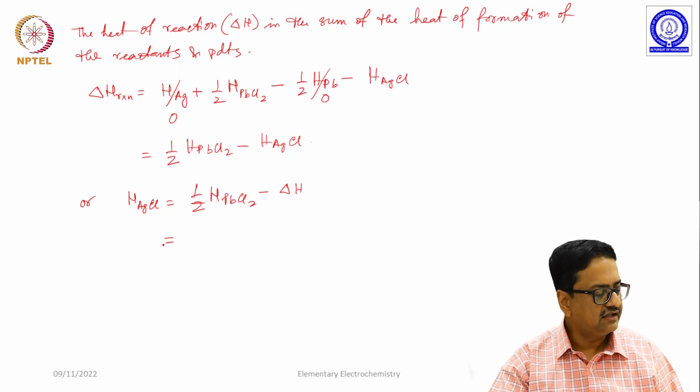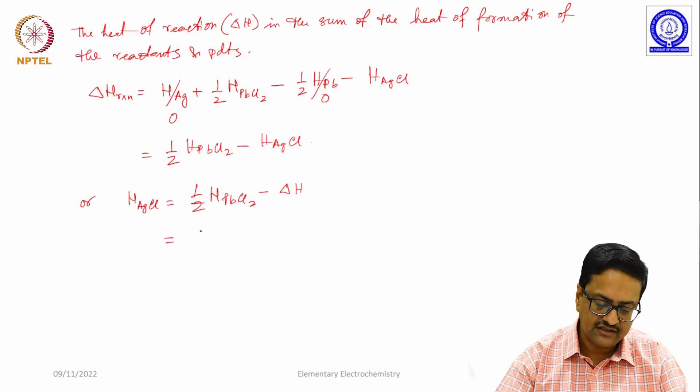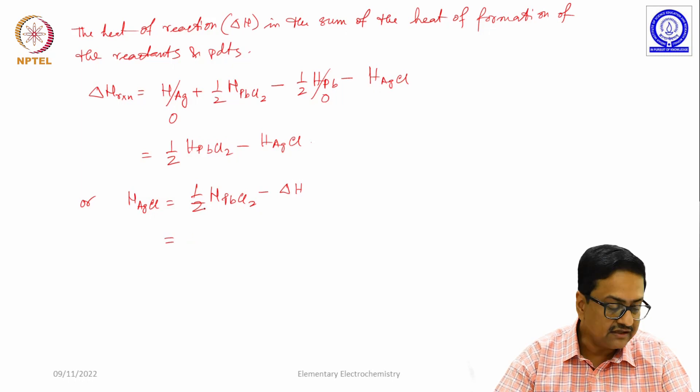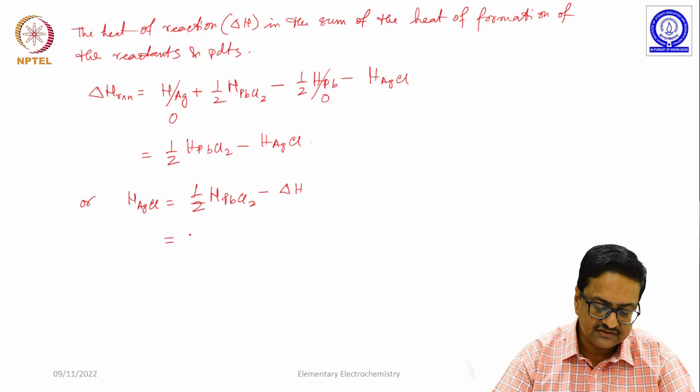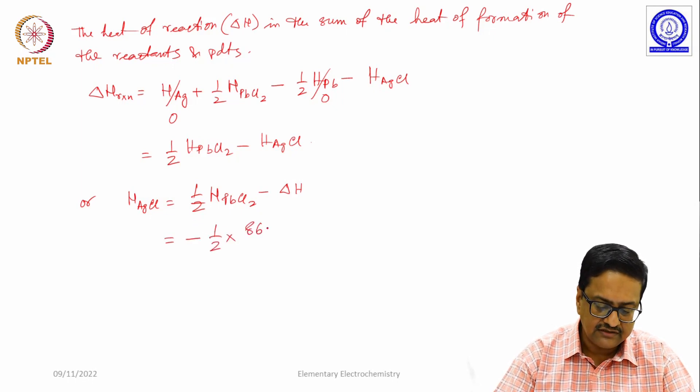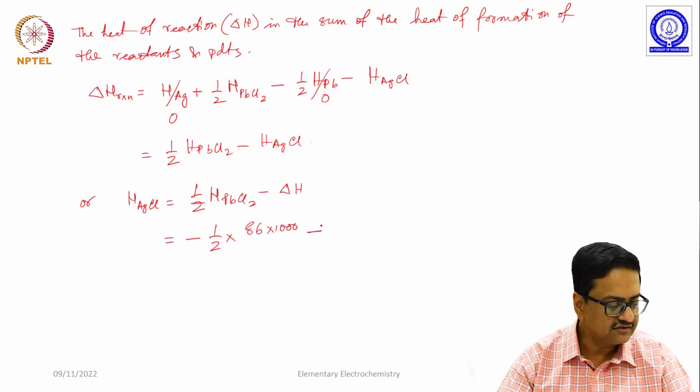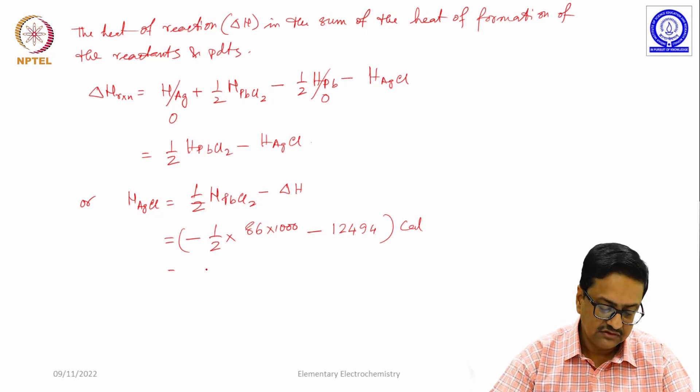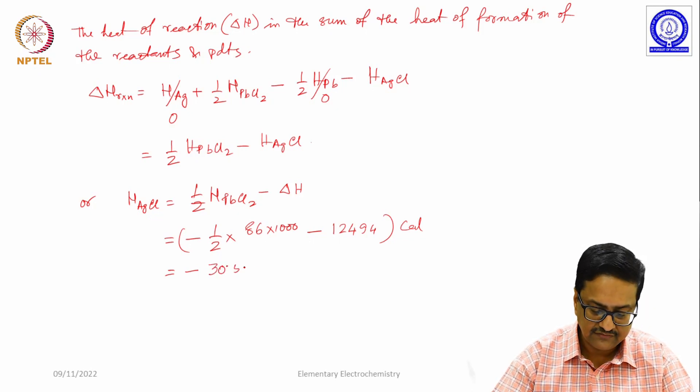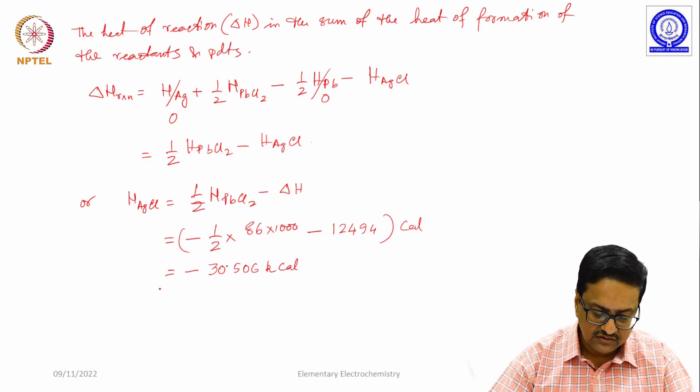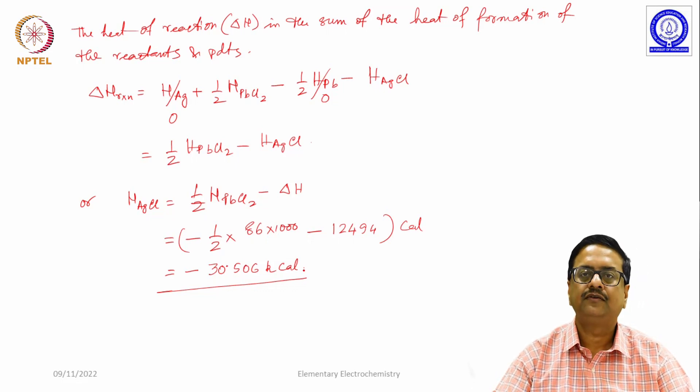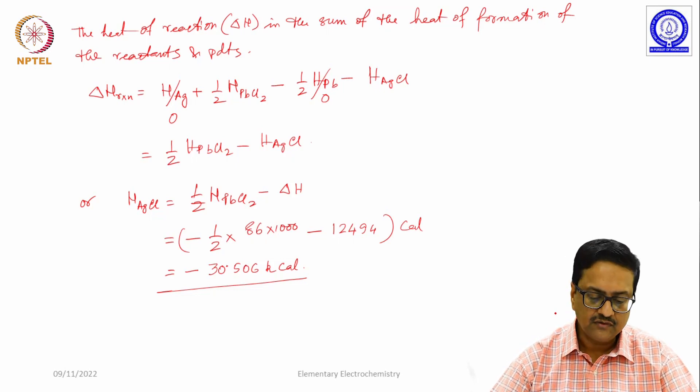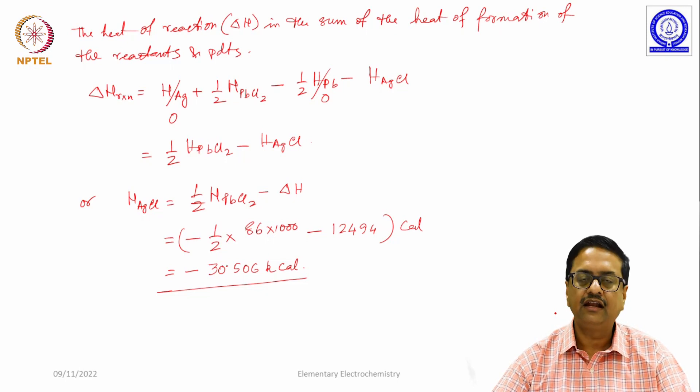What was the heat of formation of lead chloride? It is given as 86 kilocalories. This value is minus 86 kilocalorie, always the delta heat of formation is negative. So we take it as minus half into 86,000 minus the delta H that we found in the previous page is 12494 calorie. The heat of formation of AgCl is nothing but 30.506 kilocalorie. This is how one can estimate the heat of formation of AgCl that is involved in a chemical reaction in an electrochemical or electrolytic cell.